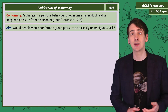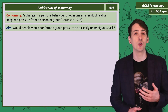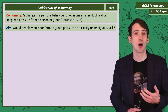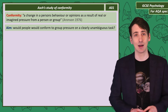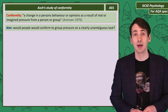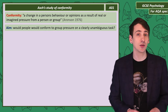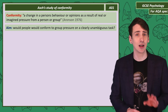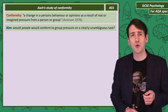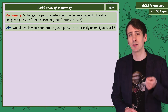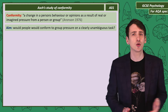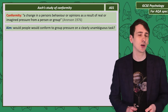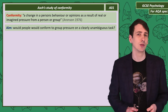He wanted to see if people would conform to a group on an unambiguous task — meaning, if everybody else in the group was clearly wrong in their response, would the participant give the correct answer or just go along with the incorrect response?